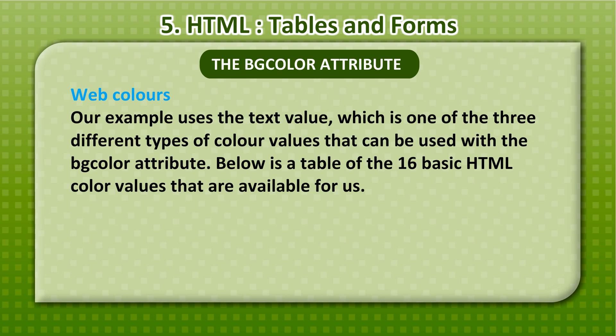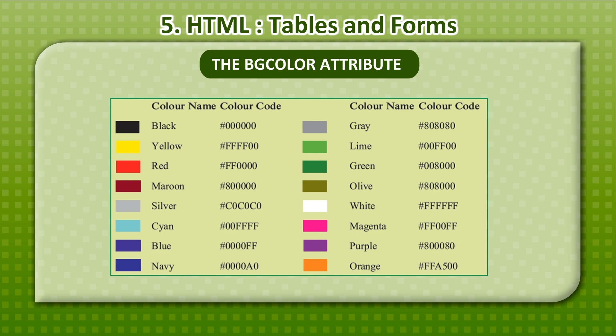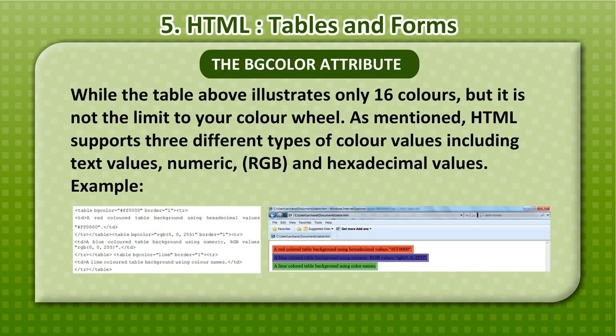Below is a table of the 16 basic HTML color values that are available. While the table illustrates only 16 colors, that is not the limit to your color wheel. HTML supports three different types of color values including text values, numeric RGB, and hexadecimal values.